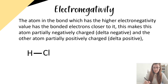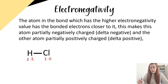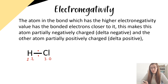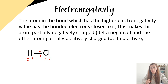Hydrogen's electronegativity value is 2.2 and chlorine's electronegativity value is 3.0. If those electronegativity values were the same, the electrons would lie in the middle of the bond, but they're not the same. Chlorine has a higher electronegativity value than hydrogen, so chlorine wants to pull bonded electrons towards itself more strongly. The electrons will lie ever so slightly closer to the chlorine atom.